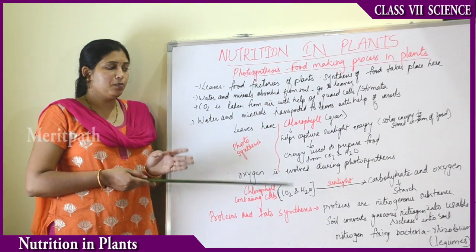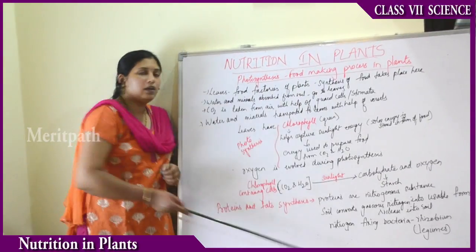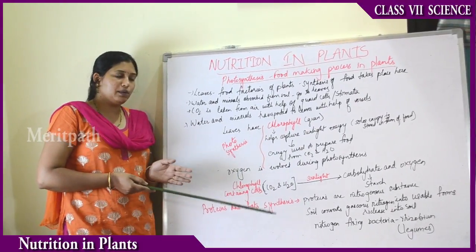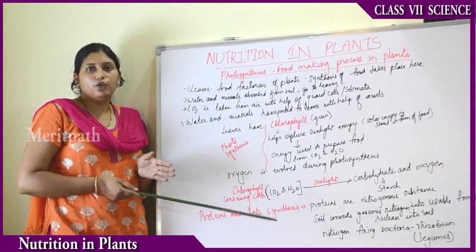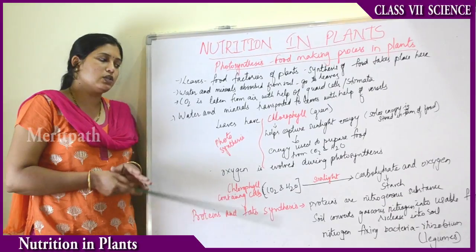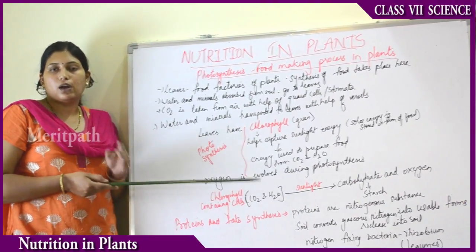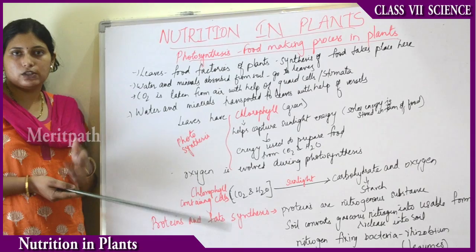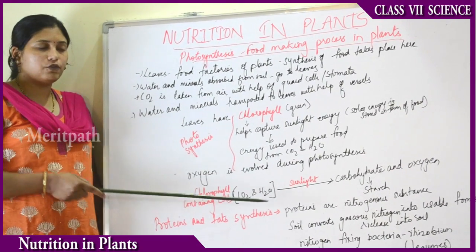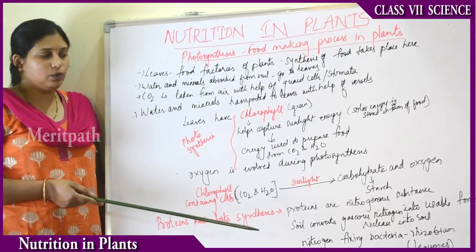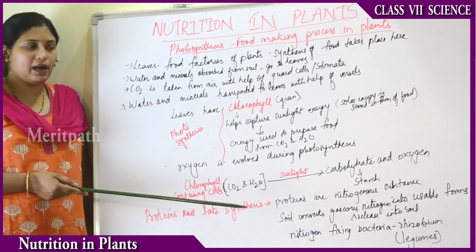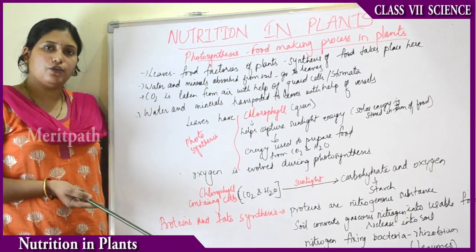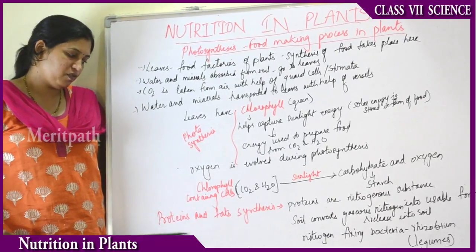There are also nitrogen-fixing bacteria called Rhizobium that fix atmospheric nitrogen in the soil, convert it into other usable forms, and supply it to plants for the process of protein and fat synthesis. These nitrogen-fixing bacteria are usually present in leguminous plants. Leguminous plants are those whose fruit or seed is used as food — for example, groundnut and green peas, which are dicotyledonous or seeded plants. Nitrogen-fixing bacteria help convert atmospheric nitrogen into inert forms, which are then utilized by the plants for synthesis of proteins and fats.